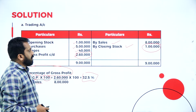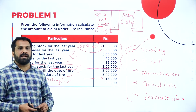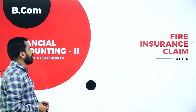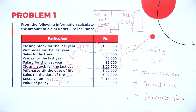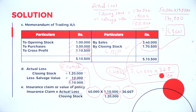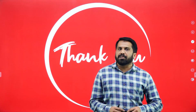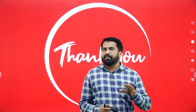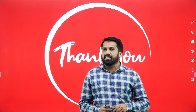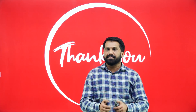Before I wind up, I'll go back to all the previous screens so you can take a screenshot. This is your fire insurance claim, problem number 1: trading account, memorandum of trading account, actual loss, and insurance claim. This is all about the topic called insurance claim. There are 5 steps — follow them one by one and it will be easy for you. Thank you.